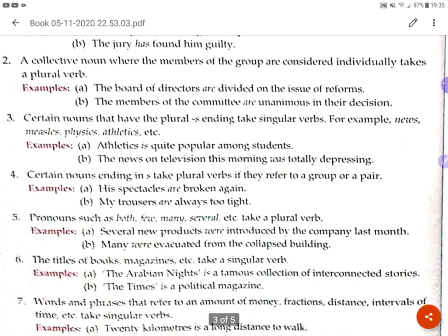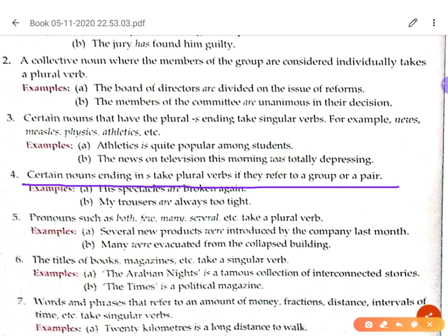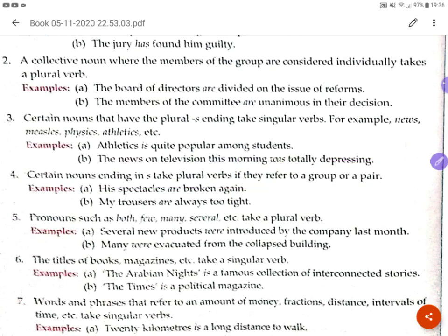The next rule: certain nouns ending in -s take a plural verb if they refer to a group or a pair. For example, shoes and trousers refer to a pair. 'My trousers are always too tight' — since trousers refers to a pair, it takes the plural verb 'are.'